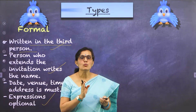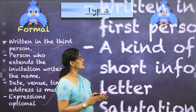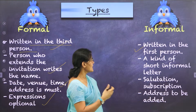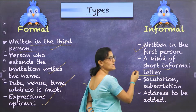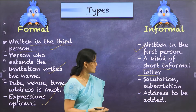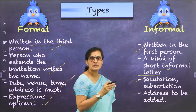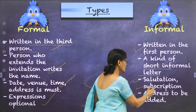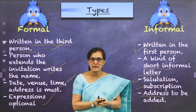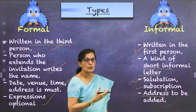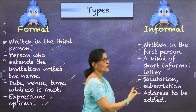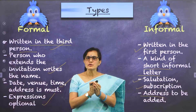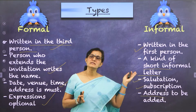Now let's see what is the informal type of invitation. When I say informal, it will always be in the first person — 'I' — and it's a kind of a short informal letter. So you have to have your salutation. Salutation means 'My dear' or 'Dear' and name, the body, and of course the address. This is the way for the informal way of writing an invitation. The two types of invitation you need to know are formal and informal.